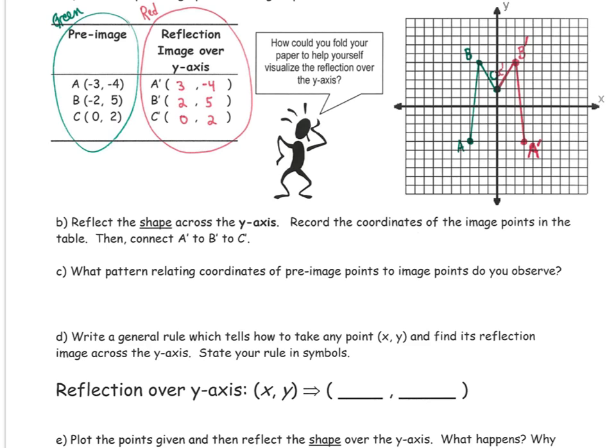We see that the pattern is that we have opposite x values, but the y values are the same. If I take any coordinate point, x comma y, then the y value will stay the same, but the x is the opposite.